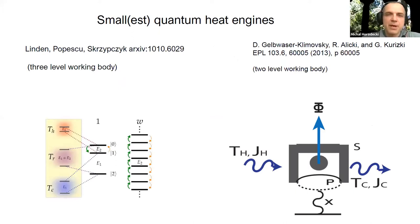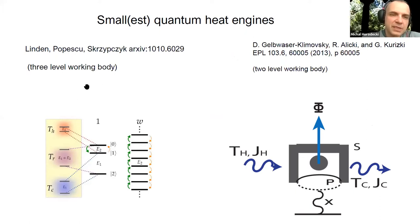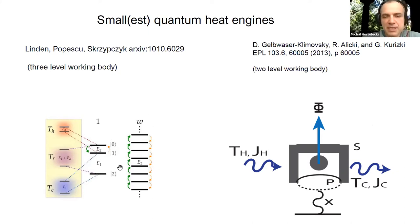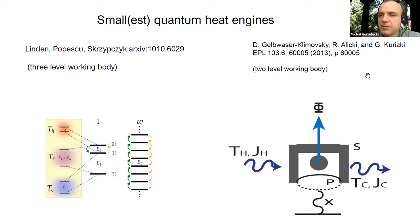Recently people were trying to consider the smallest possible quantum engines. One example is in a paper by Popescu et al., where there was a three-level working body. The battery was an unbounded-from-below ladder. Gelbasa, Primozka, Litsky, and Kuritsky considered a two-level system interacting with two baths and an oscillator.